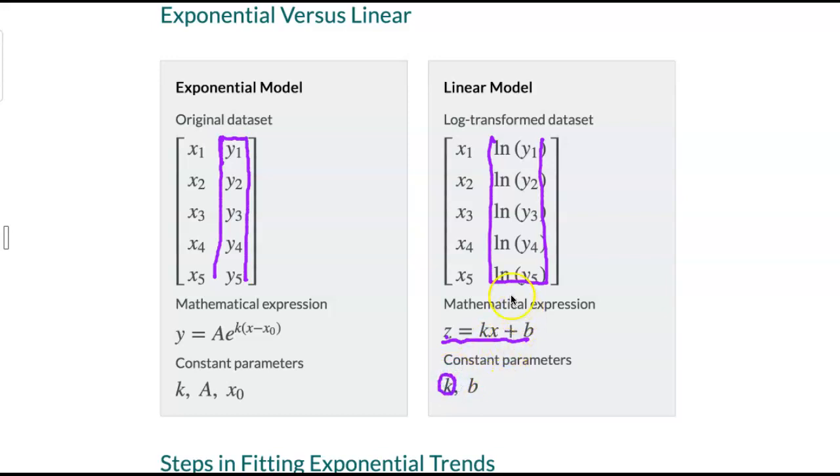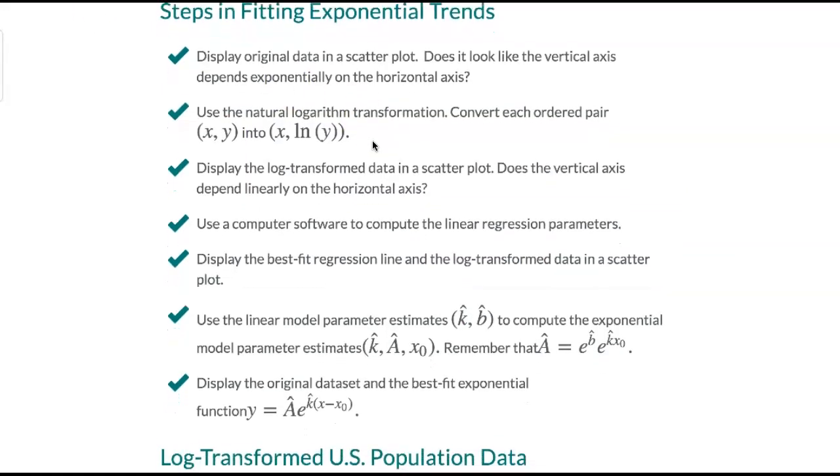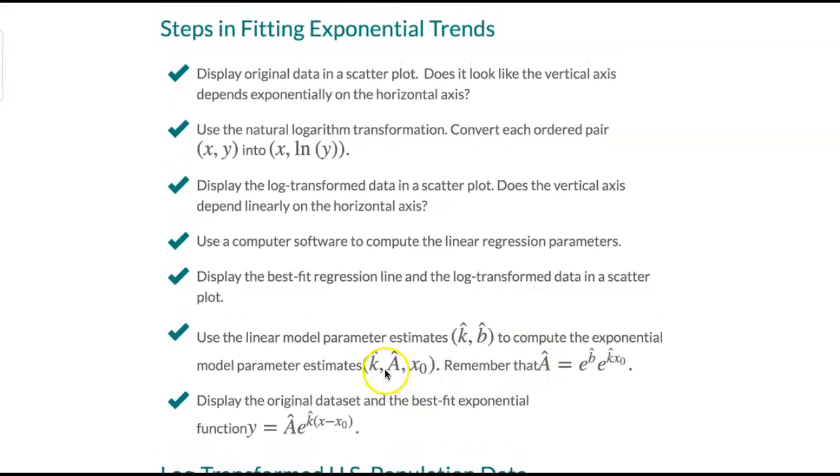A very important step is: once the slope and the intercept of the line in logarithmic scale have been computed, they need to be transformed into the parameters of the exponential model. One of those parameters is called A, which is a coefficient.